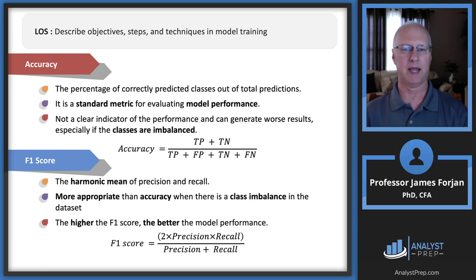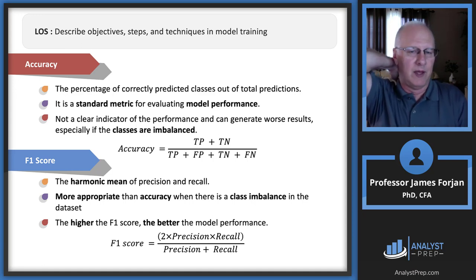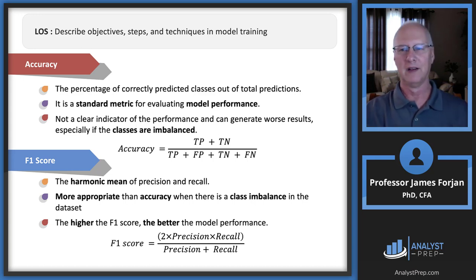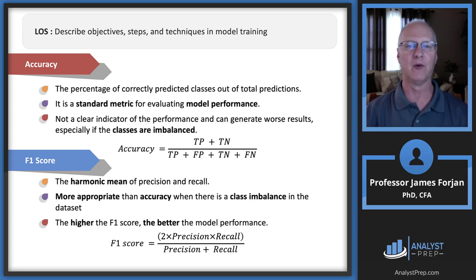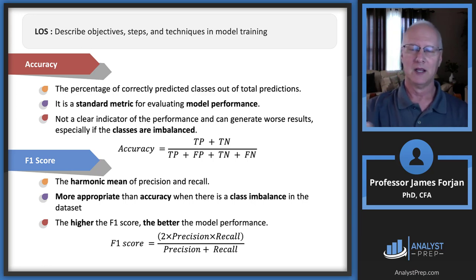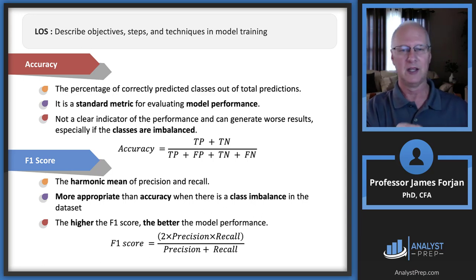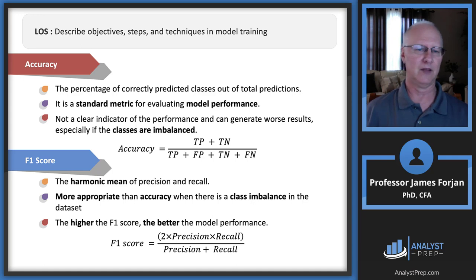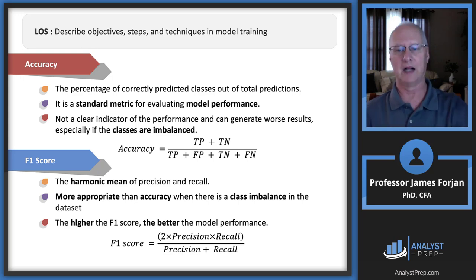The F1 score is a harmonic mean of precision and recall. Remember the harmonic mean: you put N in the numerator and divide by the sum of reciprocals — one over A plus one over B, and so on. It's just another way of calculating a middle value. What's most important to remember is the class imbalance issue: when classes are imbalanced, use the F1 score rather than accuracy.